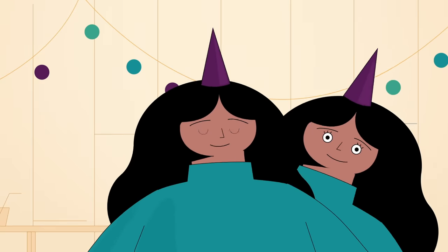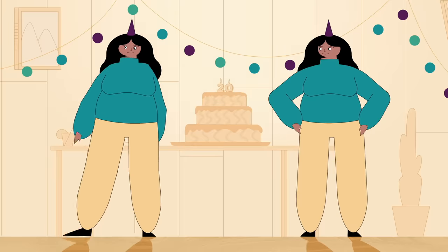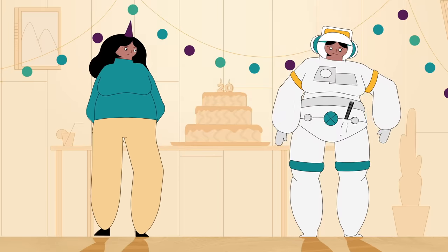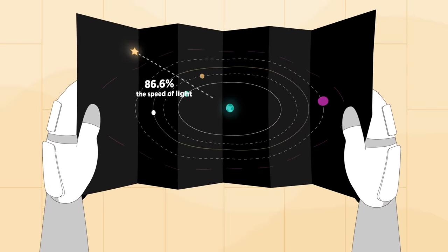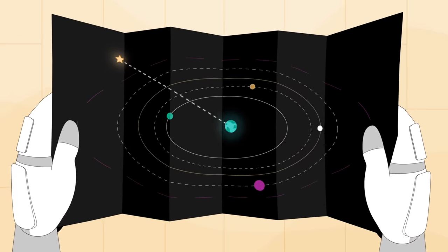On their 20th birthday, identical twin astronauts volunteer for an experiment. Terra will remain on Earth, while Stella will board a spaceship. Stella's ship will travel at 86.6% the speed of light to visit a star that is 10 light-years away, then return to Earth at the same speed.